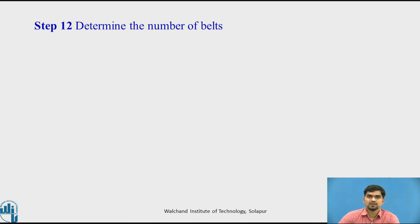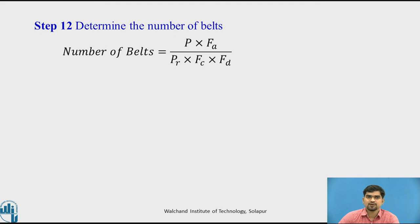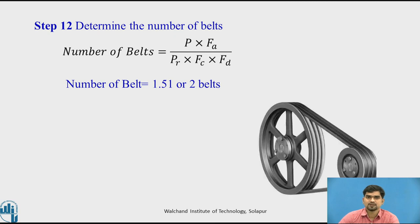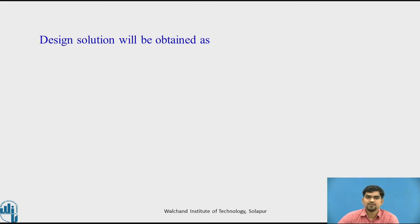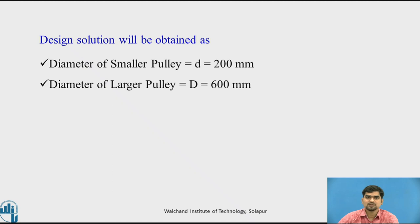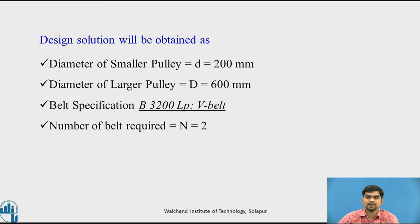Step 12: determine the number of belts. Using the equation for finding the number of belts, we calculate 1.51, so we round up to 2 belts required for that power transmission. The final design solution: diameter of smaller pulley d = 200 mm, diameter of larger pulley D = 600 mm, belt specification B3200 LP V-belt, number of belts required = 2, center distance = 950.64 mm.